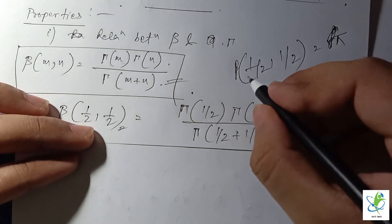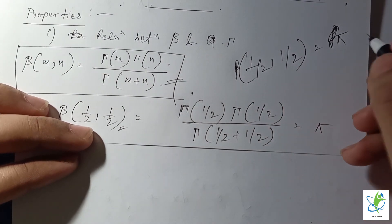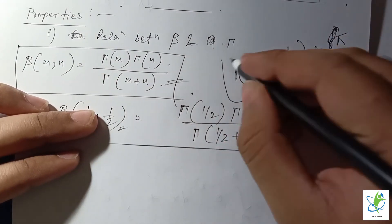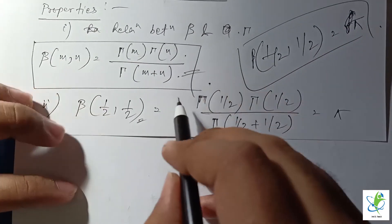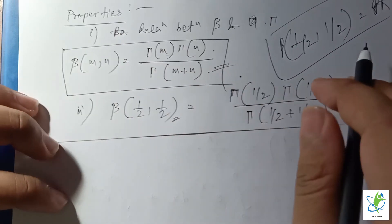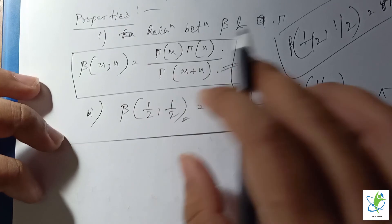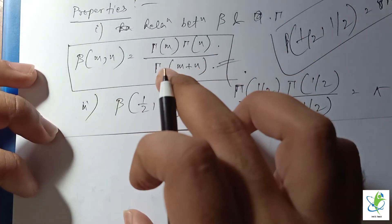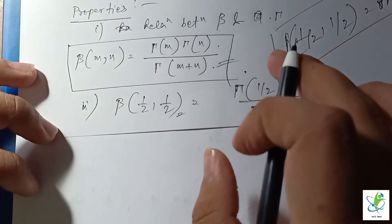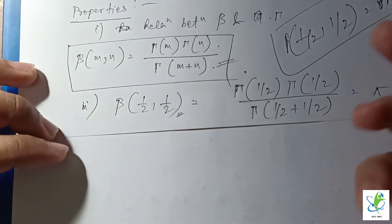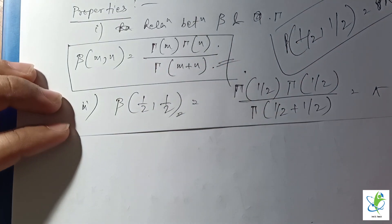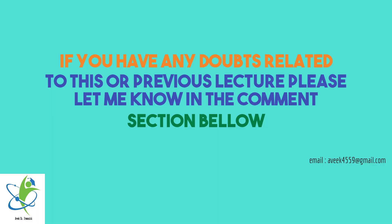These two are the main properties of the beta function which we will be using in our successive problems.